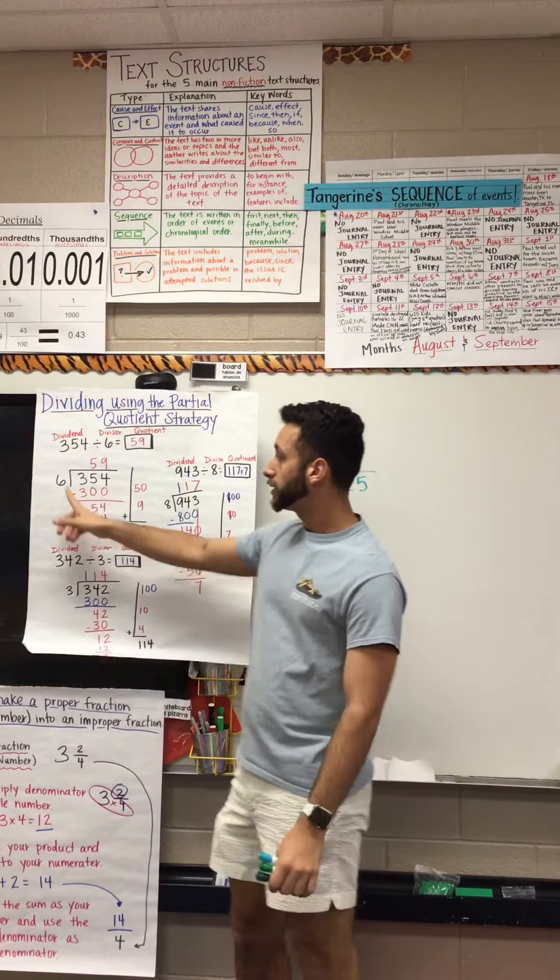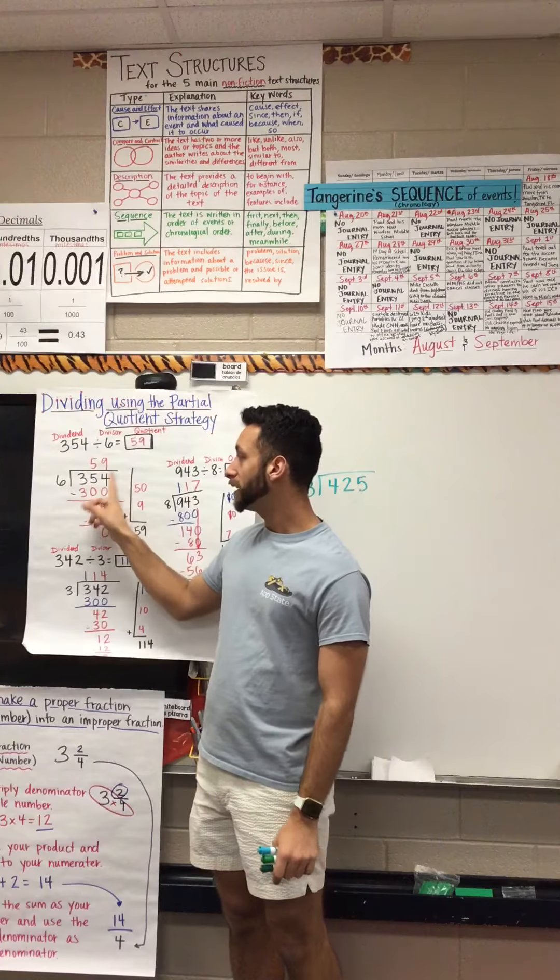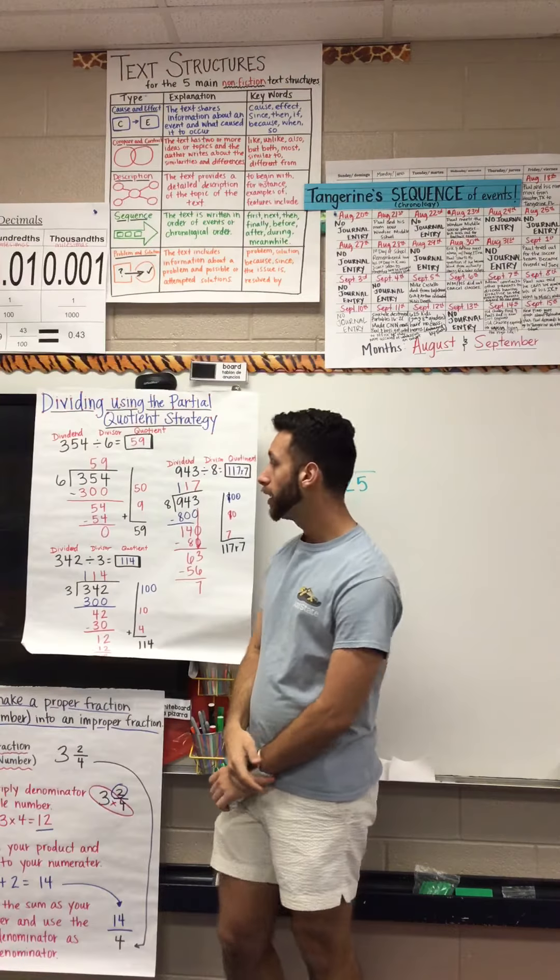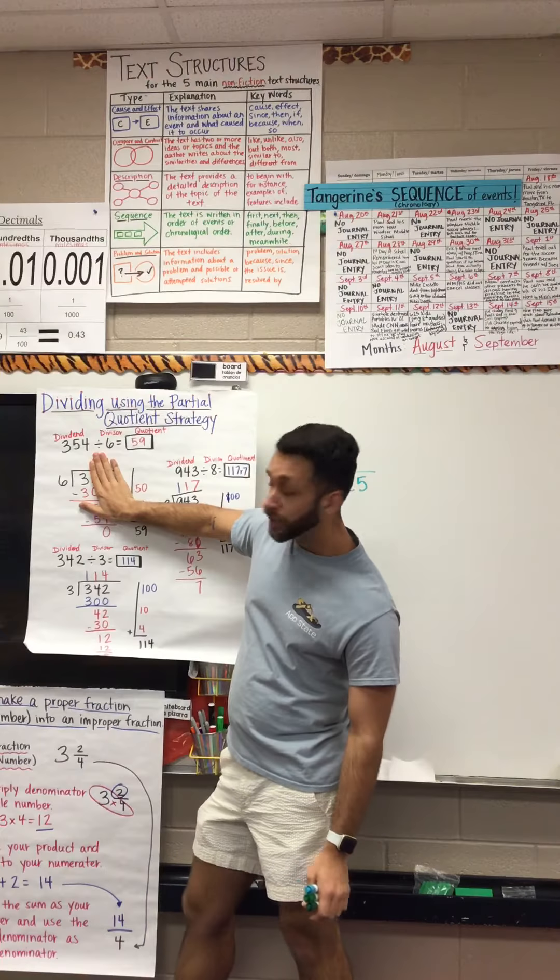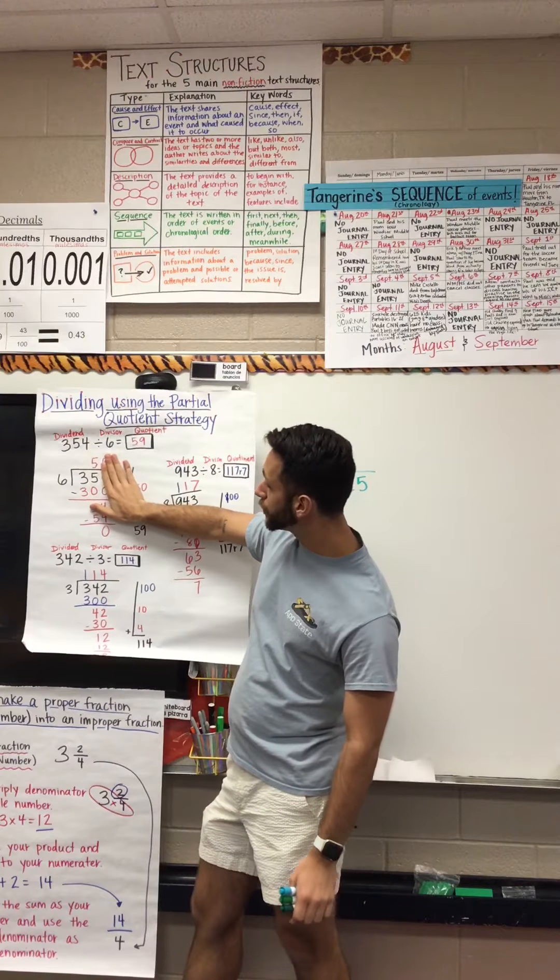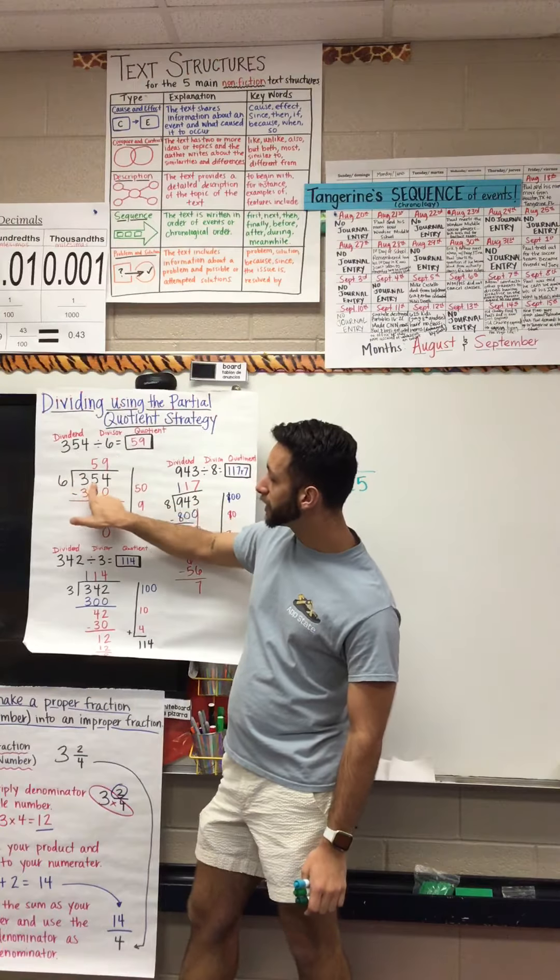So with that being said, six is going to be divided into 354. Now notice, does six go into three? It does not, so that means you have to go over. How many times does six go into 35? Five times. Five times six is thirty. Notice I wrote thirty here.